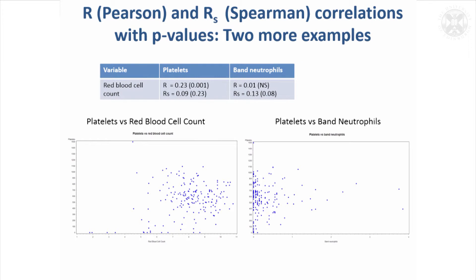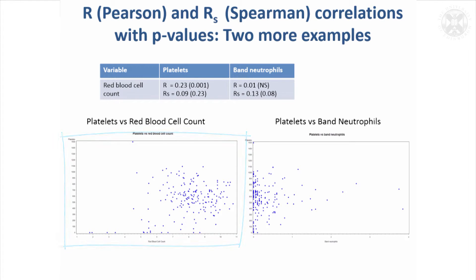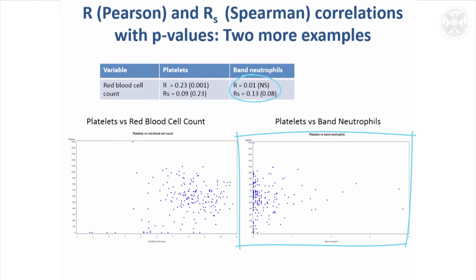There's quite a few odd low outlying values for the one on the bottom, which is red blood cell count. The same thing happens when red blood cell count is correlated with band neutrophils — the correlation coefficients are quite different. In fact, the Spearman one is almost significantly positive, and when you work with the ranks rather than the exact values, that's what it's telling you. You can see that these data are very asymmetrical and not very normally distributed. Always bear in mind the Spearman rank correlation coefficient — it might be more appropriate sometimes.